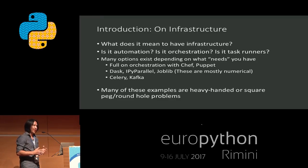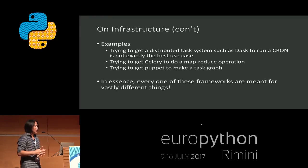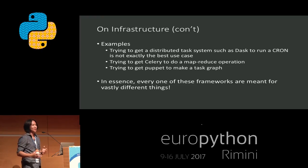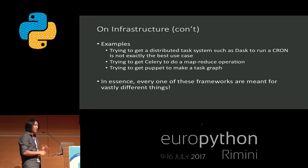Many of these examples are very heavy-handed — they'll do a lot, but you have a lot of setup because they're not necessarily meant for a specific task. You usually have one solution that's way too complicated for the job you're actually using it for. Some examples of these really odd situations: using a distributed task system such as Dask to run a cron job is completely out of scope of what it's supposed to be doing, or trying to get Puppet to make a task graph. These are all examples of when you have competing features that don't exactly fit under the paradigm of whatever task you're doing — you're using these frameworks against what they were designed for.